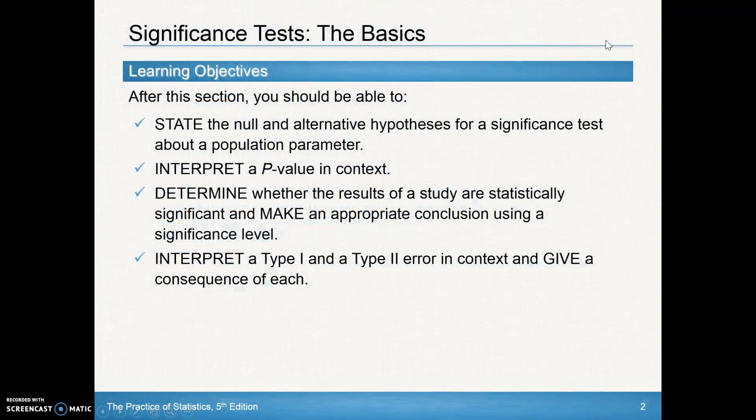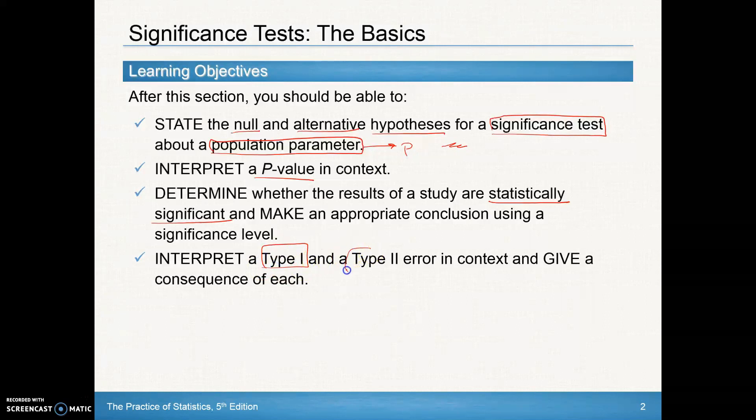Some of the things we'll be able to learn: we're going to learn about what's called a null and an alternative hypothesis for a significance test. It's a new procedure for evaluating a claim about a population parameter. Again, our population parameters we've been dealing with are p for population proportion and mu for population mean. We're going to learn about a p-value, and we're going to remind ourselves a little bit about statistical significance. And then we'll learn a little bit about type 1 and type 2 error, and be able to give a consequence of each.